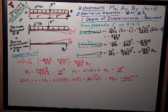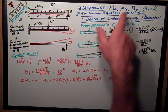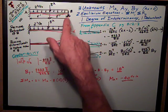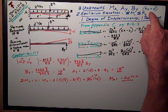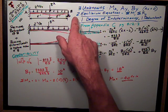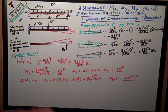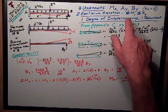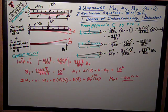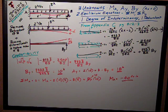So we look at it, we have three unknowns: the moment at A, the reaction at A, and the vertical reaction at B. Ax is zero, there's no x forces on it, but I only have two equilibrium equations with which to solve this problem. Sum of moments and sum of forces in the y direction, so it's said to have one degree of indeterminacy and one redundant force.